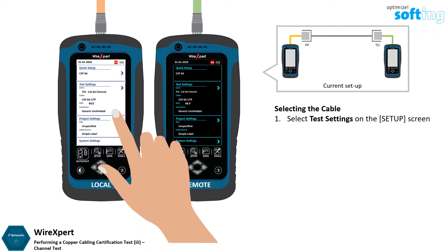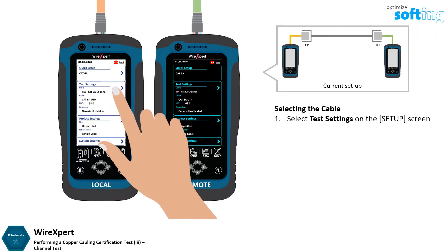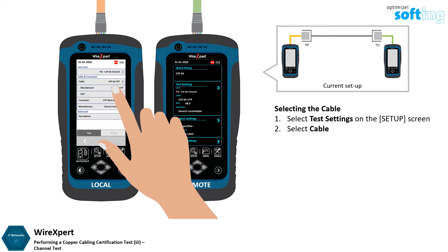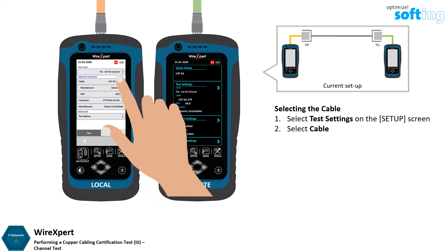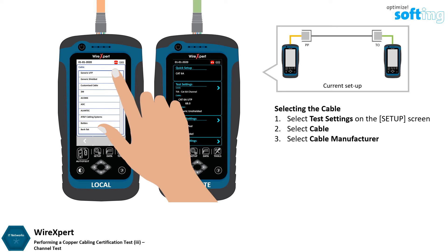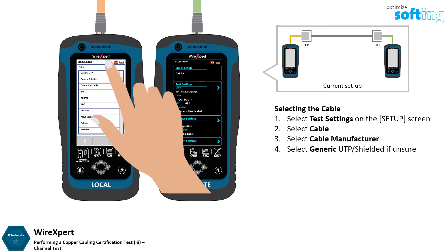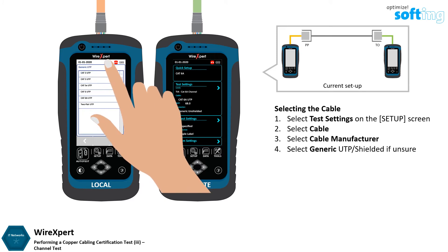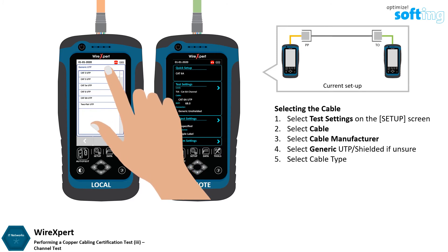Select test settings on the setup screen on the local unit. Select cable. Select the cable manufacturer, or depending on the cable construction type, select generic UTP or generic shielded if unsure of the manufacturer. Then select the cable type.